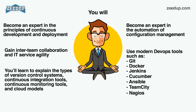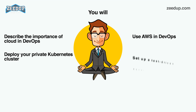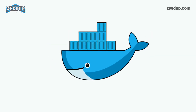You'll learn to explain the types of version control systems, continuous integration tools, continuous monitoring tools, and cloud models. You'll also describe the importance of cloud in DevOps, use of AWS in DevOps, and deploy your own private Kubernetes cluster. You will even set up a test-driven development framework with JUnit 5 and a behavior-driven development framework with Cucumber. Don't wait any longer — now that you know what Docker is used for, learn it!